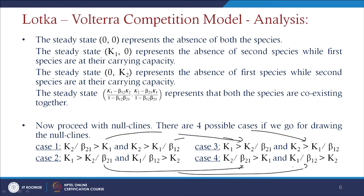For Case 1, since K1 < K2/β21, the point K2/β21 is the larger intercept on the n1 axis. Since K2 > K1/β12, K2 is the larger intercept on the n2 axis. Connecting these points establishes the null-cline lines on the n1 and n2 axes. Similar plots are made for Cases 2, 3, and 4.